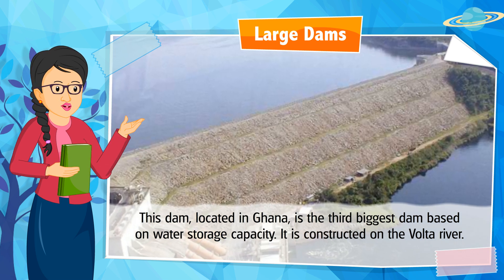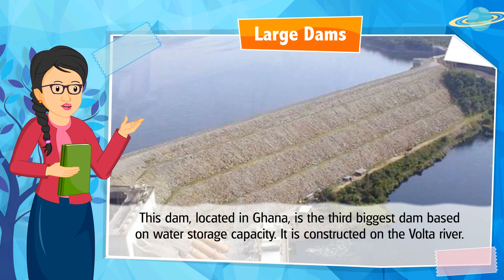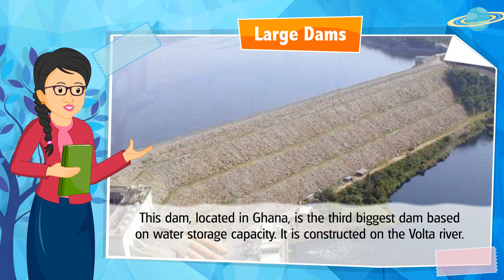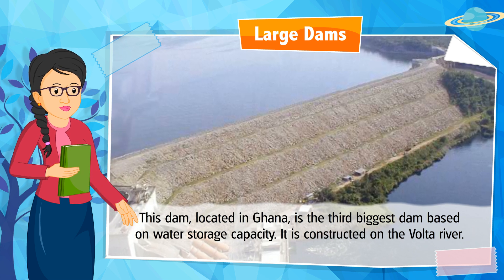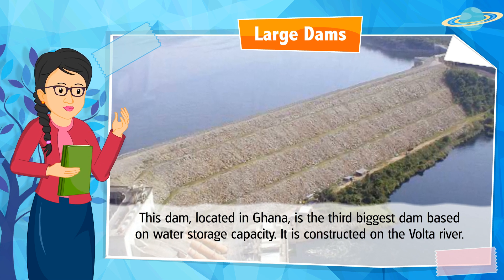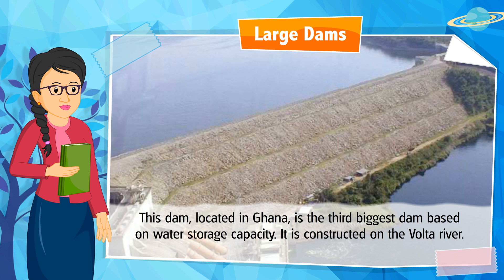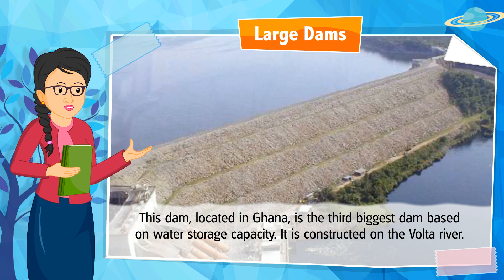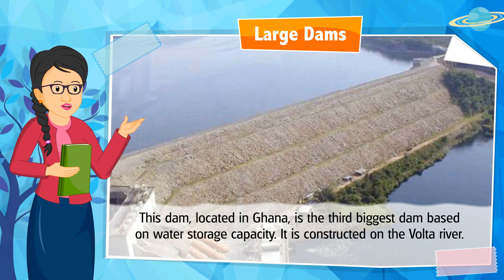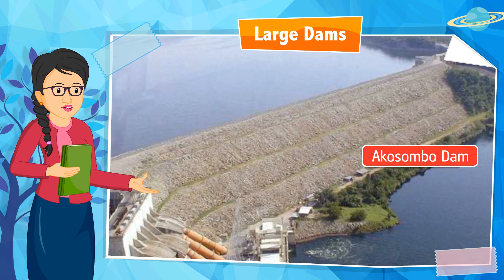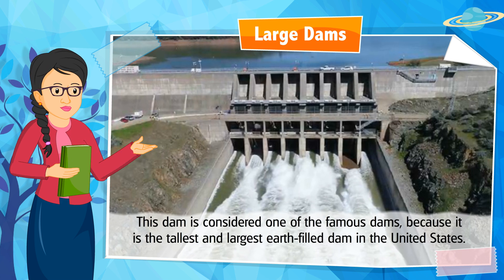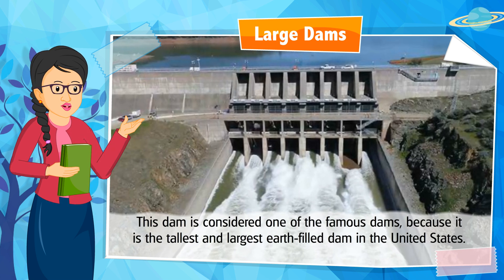This dam, located in Ghana, is the third biggest dam based on water storage capacity. It is constructed on the Volta River. Can you identify the name? It is Akosombo Dam.